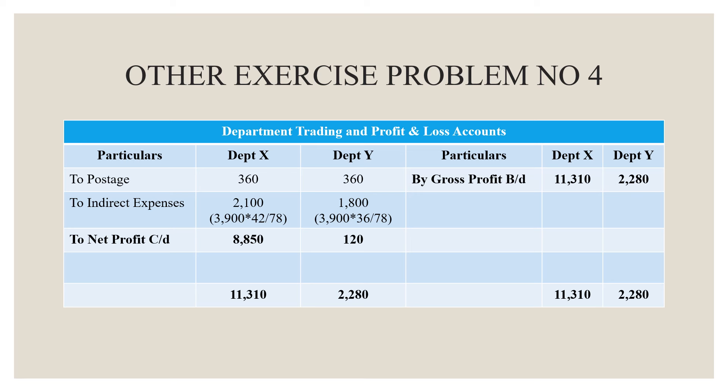The indirect expenses of 3,900 rupees are to be split in the proportion of sales. Sales are 42,000 and 36,000, so the total is 78,000. Therefore: Department X gets 3,900 × 42/78 = 2,100 rupees, and Department Y gets 3,900 × 36/78 = 1,800 rupees.